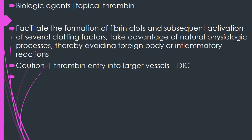Various biological agents may also be used for hemostasis, such as topical thrombin. This facilitates the formation of fibrin clots and further activates the coagulation cascade, taking advantage of a natural physiological process. By using thrombin, you avoid a foreign body reaction and an inflammatory reaction. However, thrombin bypasses the intrinsic and extrinsic pathways and concentrates mainly on the common pathway. If thrombin enters larger vessels, there is a chance of DIC.